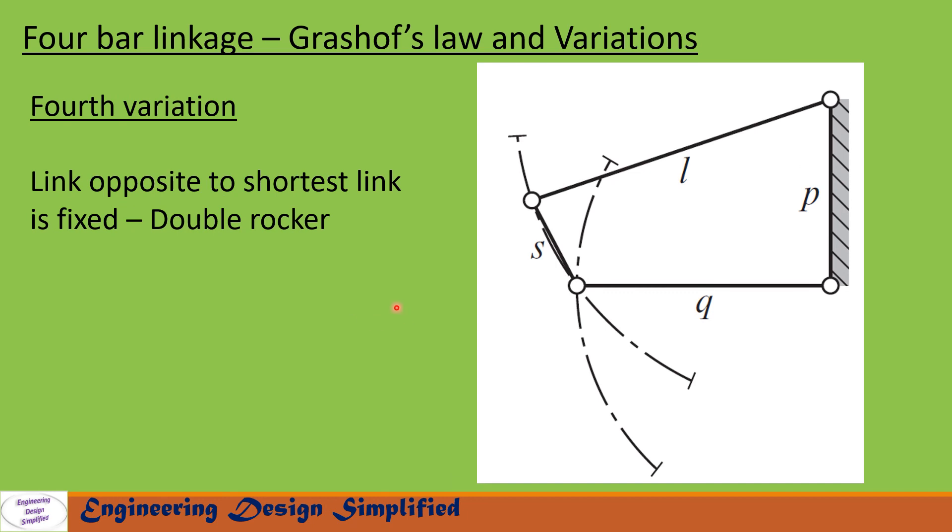We get the fourth variation when the link opposite to the shortest link, that is P, is fixed. In this case the links Q and L will not make 360 degree rotation. So here we get a double rocker mechanism.